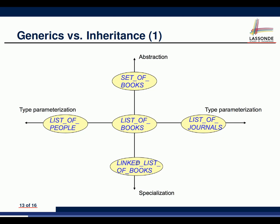The horizontal dimension is about something different — it's not about being more specialized or more abstract. Remember the first time we talked about generics: you can have a stack of integers, a stack of strings, or a stack of accounts. It doesn't matter what type of elements you store. The way you store and retrieve in a stack follows the last-in-first-out principle. What's stored inside can be parameterized — that's the horizontal direction.